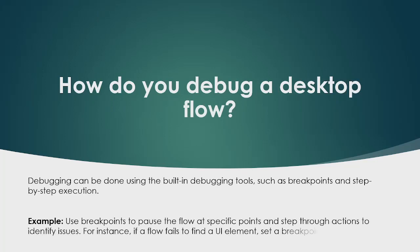The next question is: how do you debug a desktop flow? Debugging can be done using built-in debugging tools such as breakpoints and step-by-step execution. For example, use breakpoints to pause the flow at specific points and step through actions to identify issues. If a flow fails to find a UI element, set a breakpoint before the action and check the element properties.